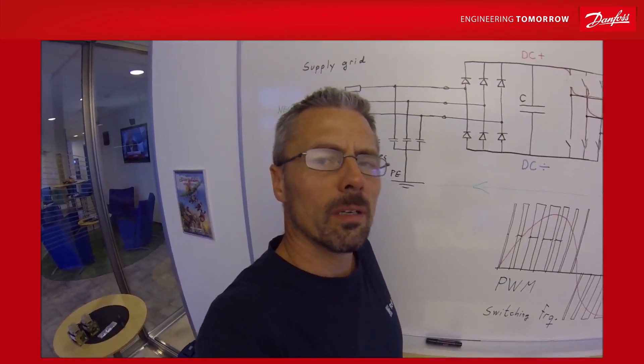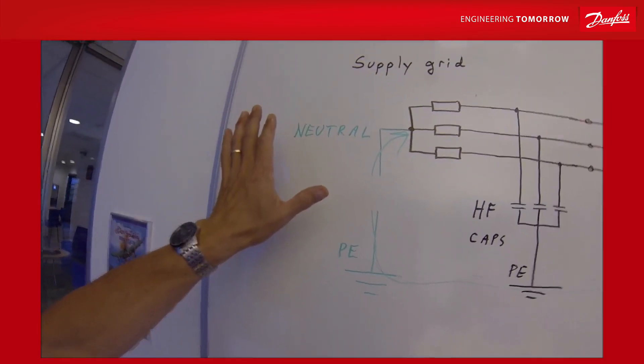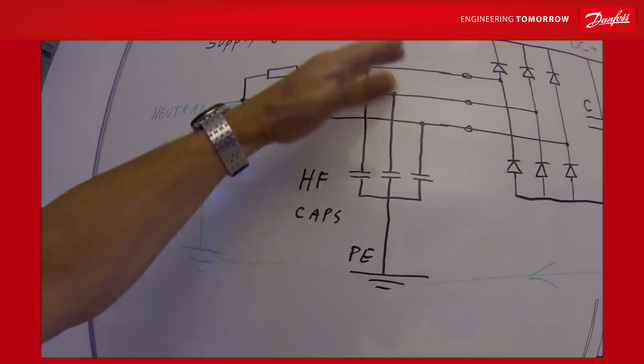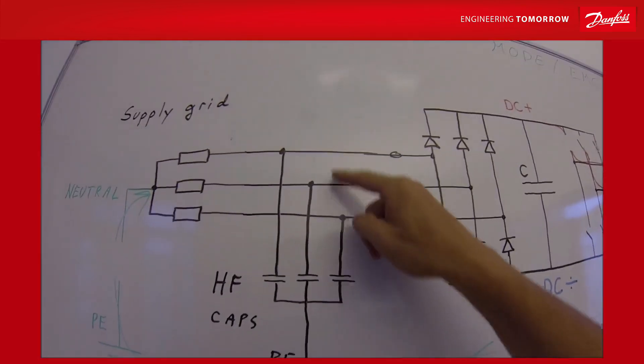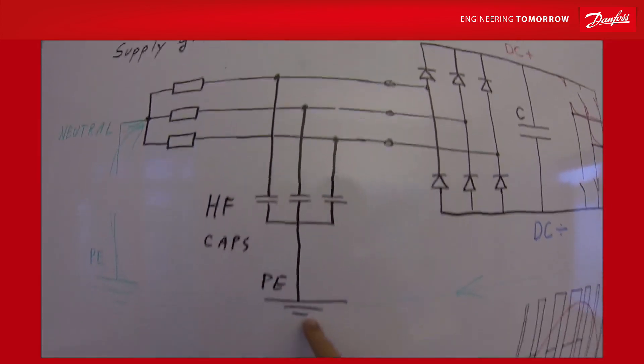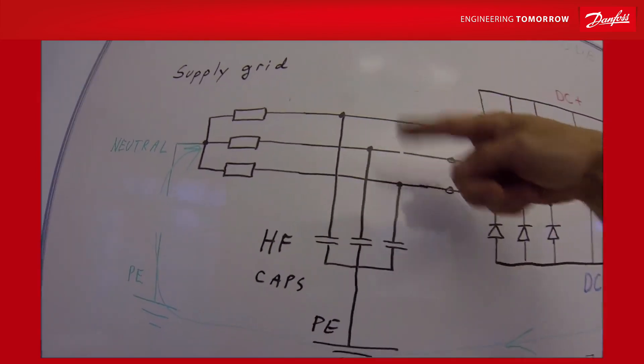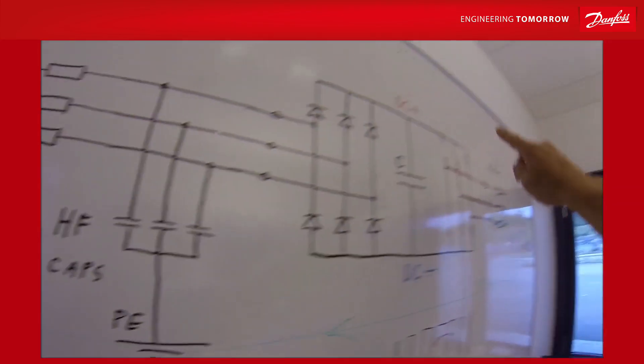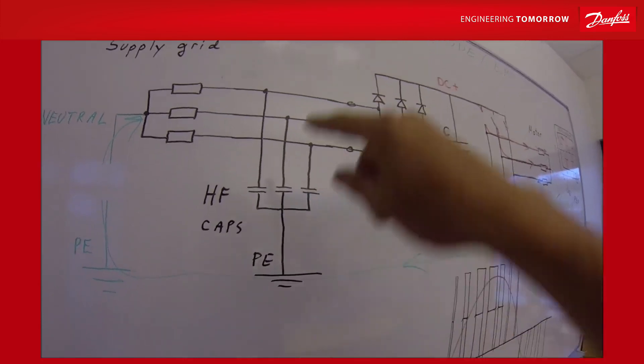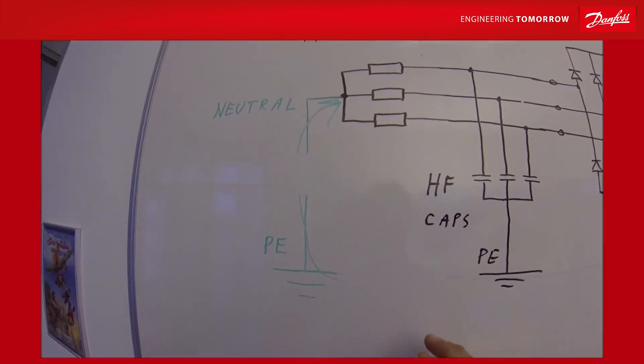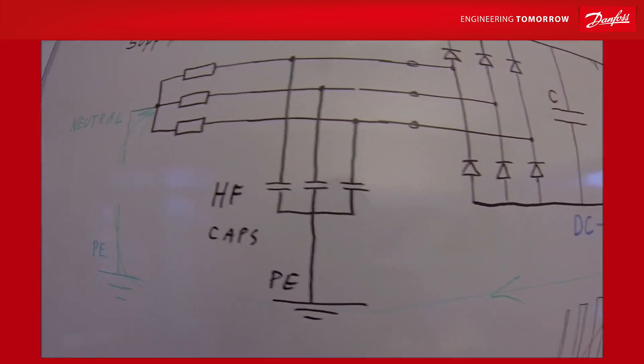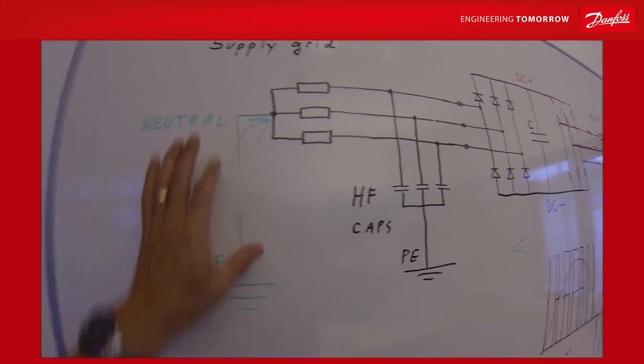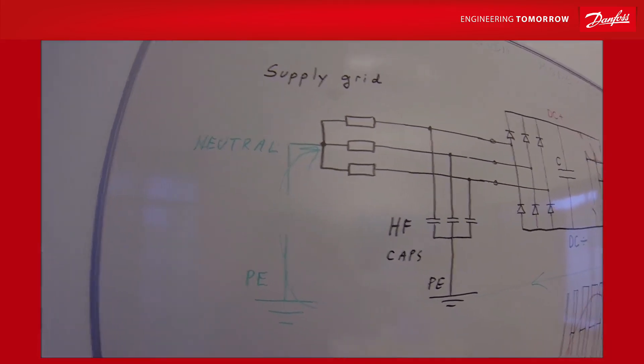One other thing that can be done to protect the supply grid from common mode is to utilize a high frequency capacitor filter. What it actually does is look at the balance between the three phases and anchor them to the protective earth. So any unbalance here will leak through the protective earth here. Basically, you create the circulating current inside this system and you avoid having the common mode distributed to your grid.